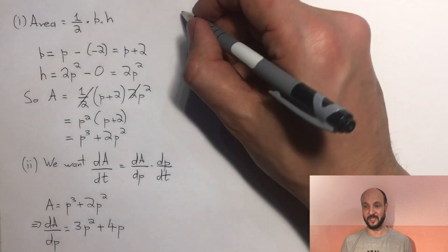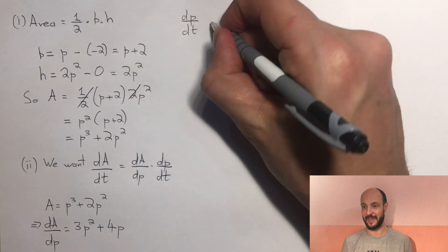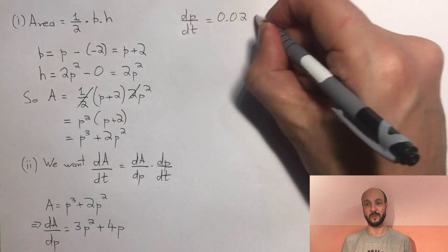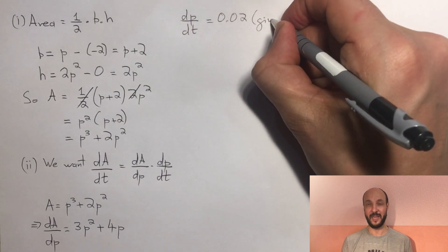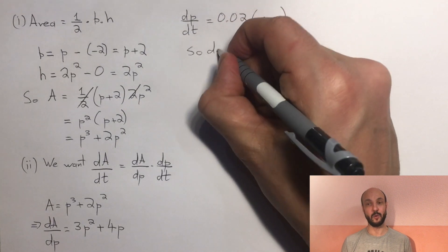Now we have to think, how is p changing over time? Well, we're told that p will go along the x-axis at a constant rate of 0.02 units per second. So the change in p over time, dp dt, is equal to 0.02.